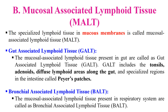So, this was all about the organs of the immune system, which include the primary and secondary lymphoid organs, and in the case of tissues, the primary and secondary lymphoid tissues. That is all for today. See you in the next video. Thank you very much.